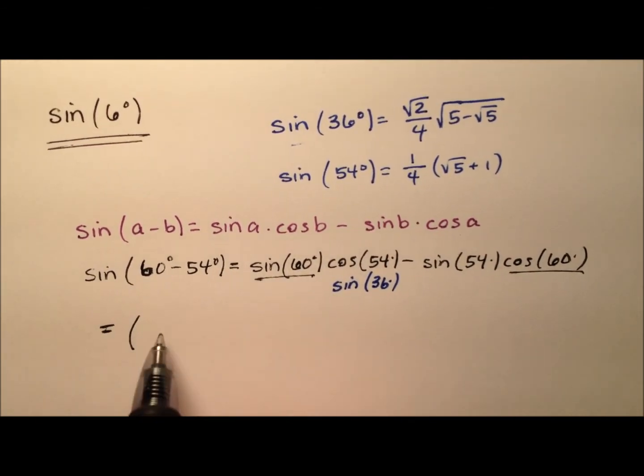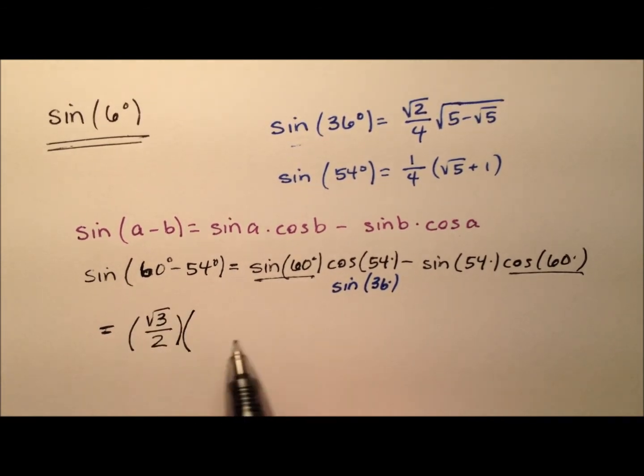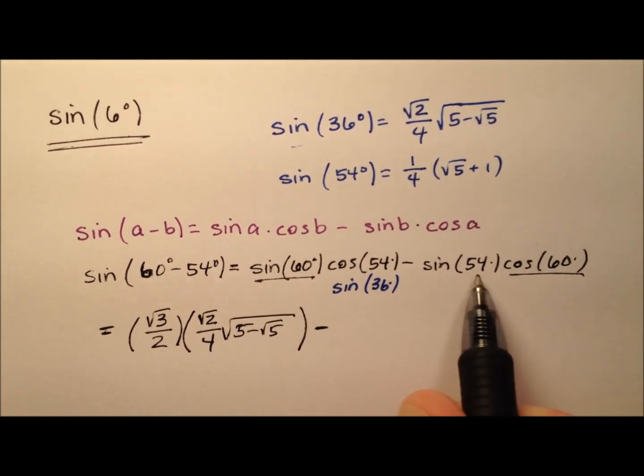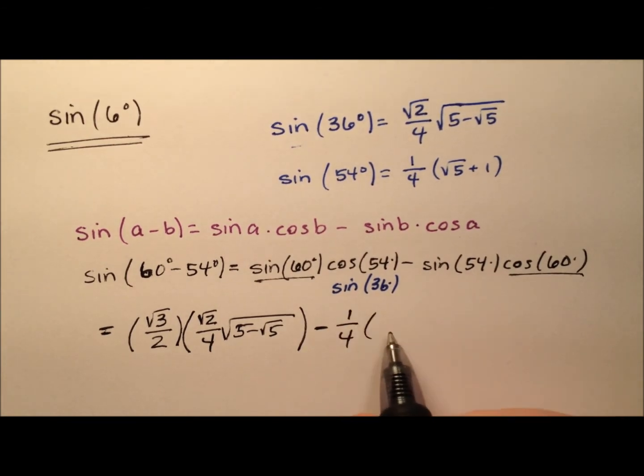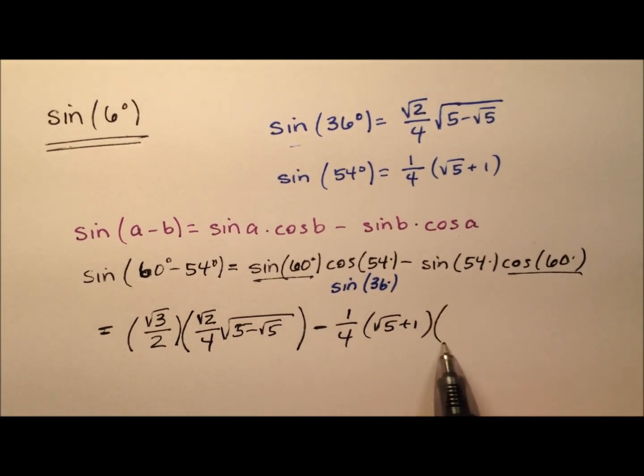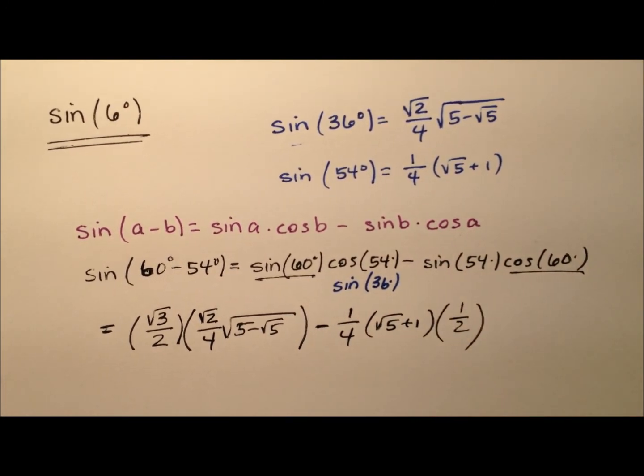The sine of 60 is the square root of 3 over 2. And we're going to multiply that by the sine of 36, which is the square root of 2 over 4 times, and then we have this square root expression here. And from that, we're going to subtract the sine of 54, which is 1 fourth times the square root of 5 plus 1 times the cosine of 60, which is 1 half.